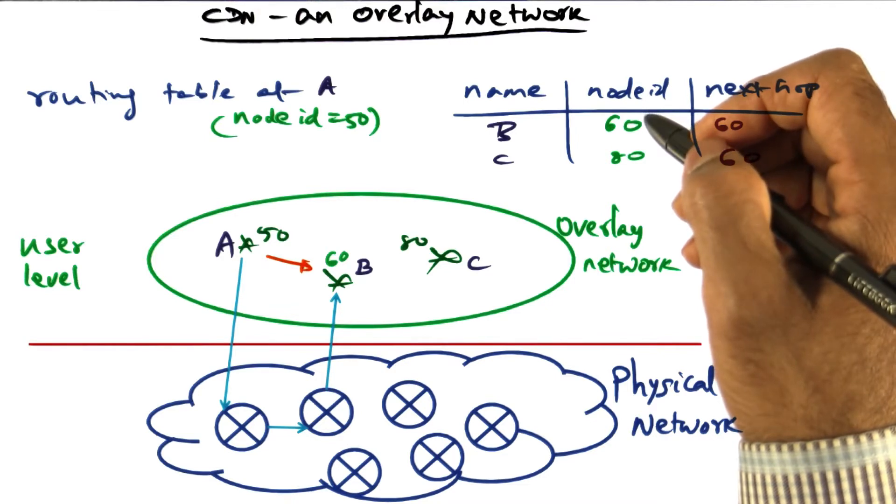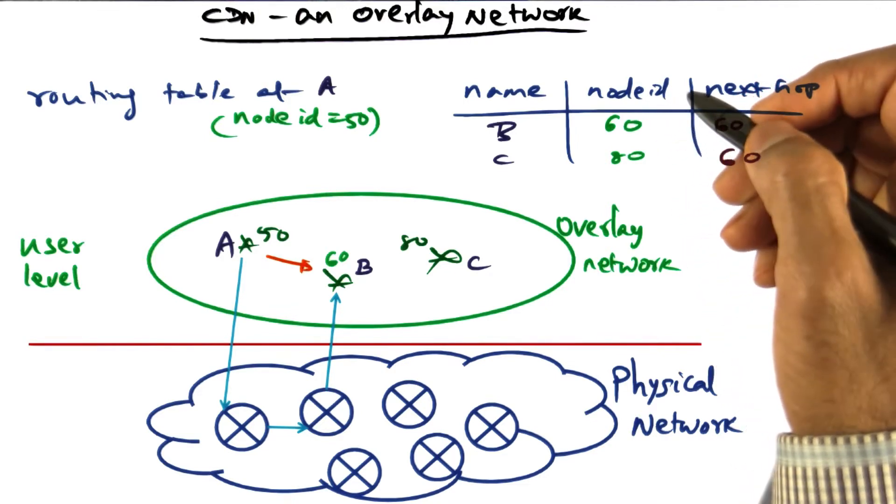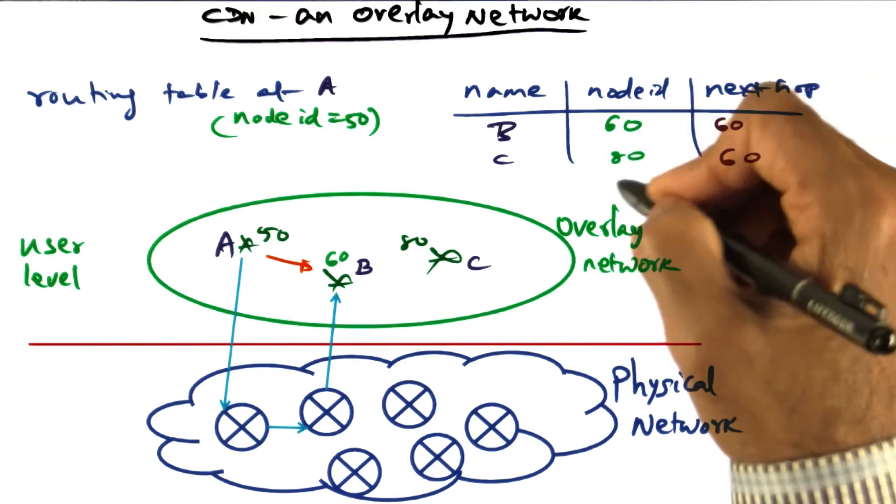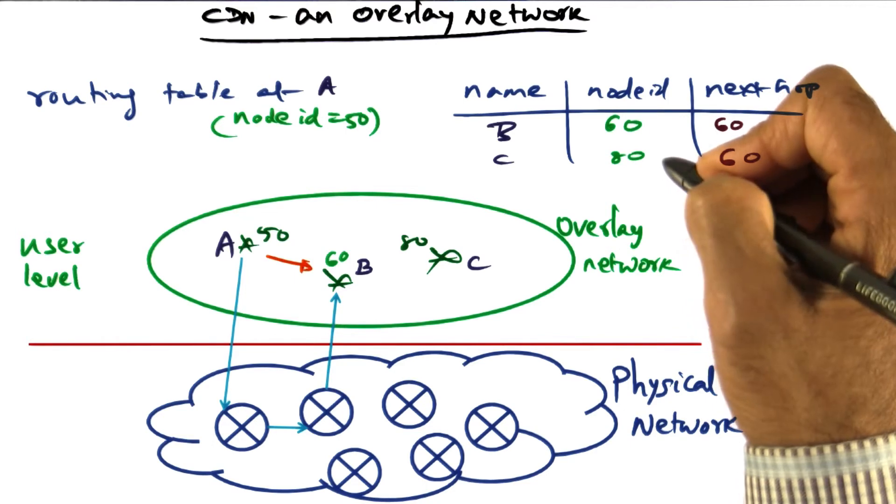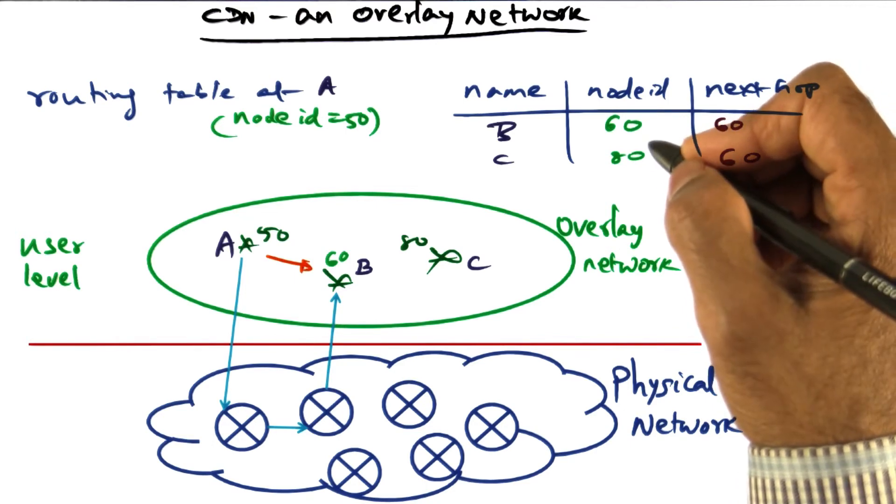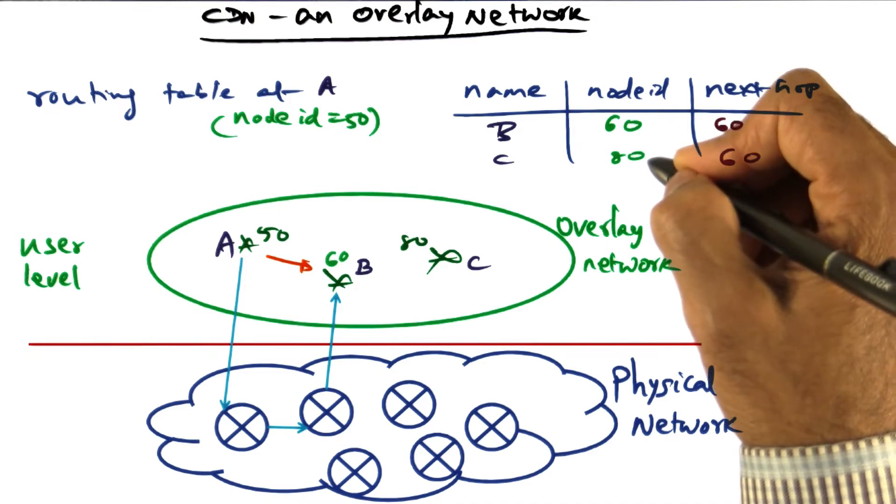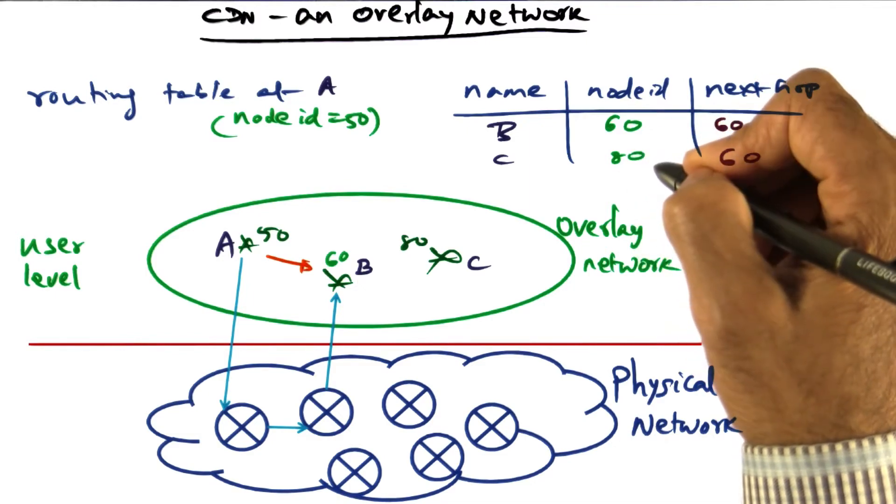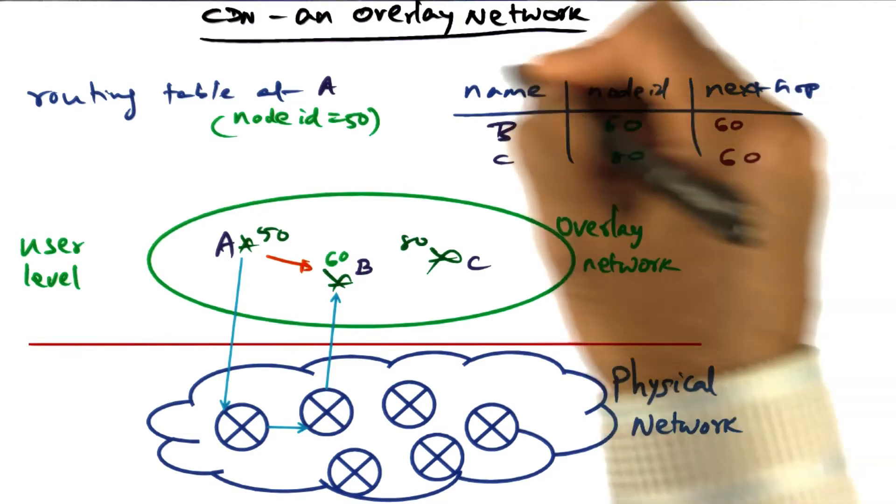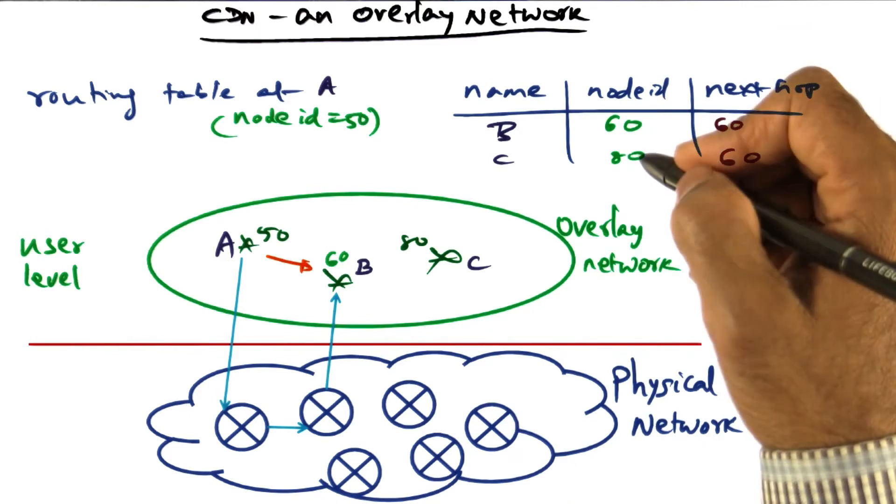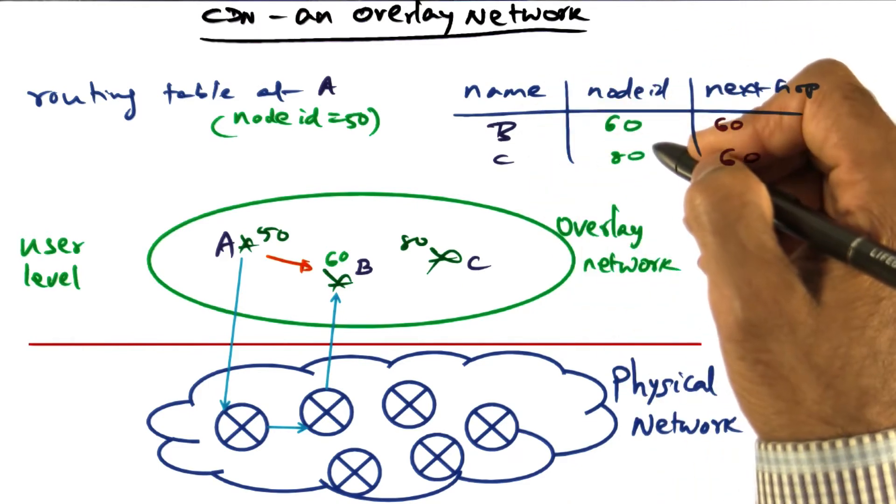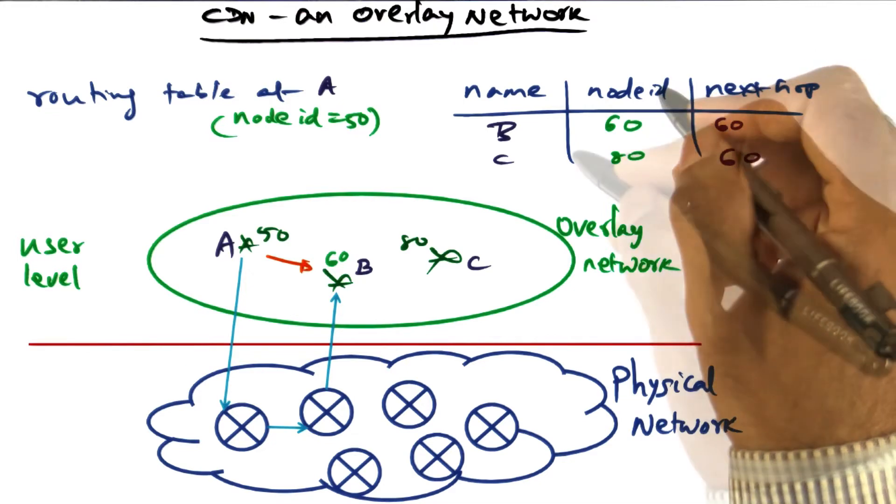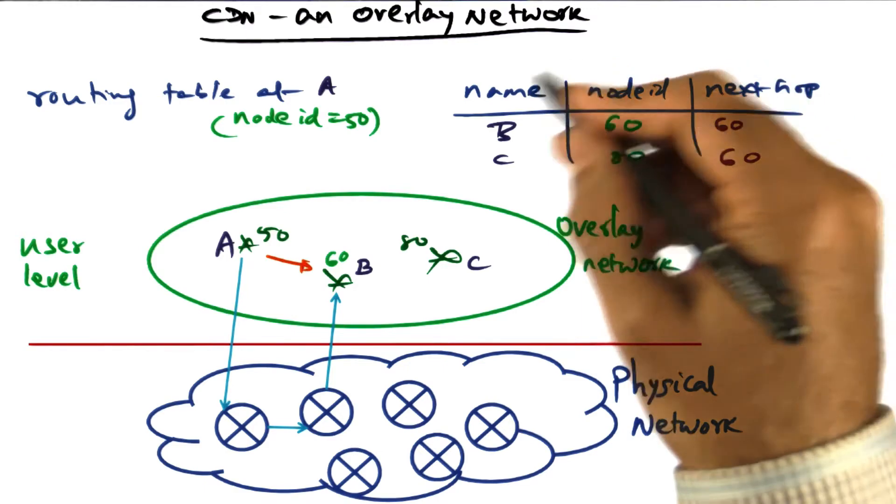And maybe a friend of yours has exchanged routing information with you—he's told you his node ID is 80 and given you how to reach him. You've shared that information with me as well, saying you have buddies and these are all the node IDs of your buddies. So that's how I construct this routing table, which consists of node IDs of my friends, friends of friends, friends of friends of friends, and so on.